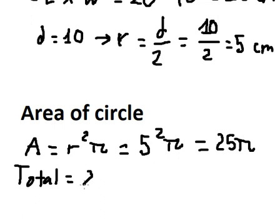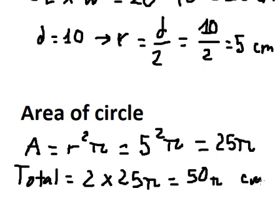That is 2 multiplied by 25π, so we have 50π square centimeters. So we want to find the shaded area.